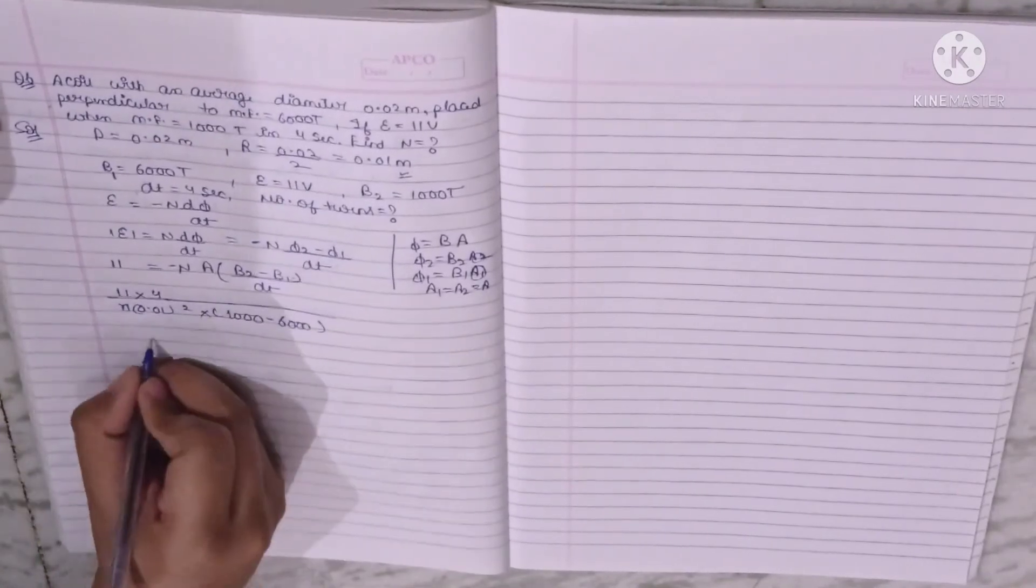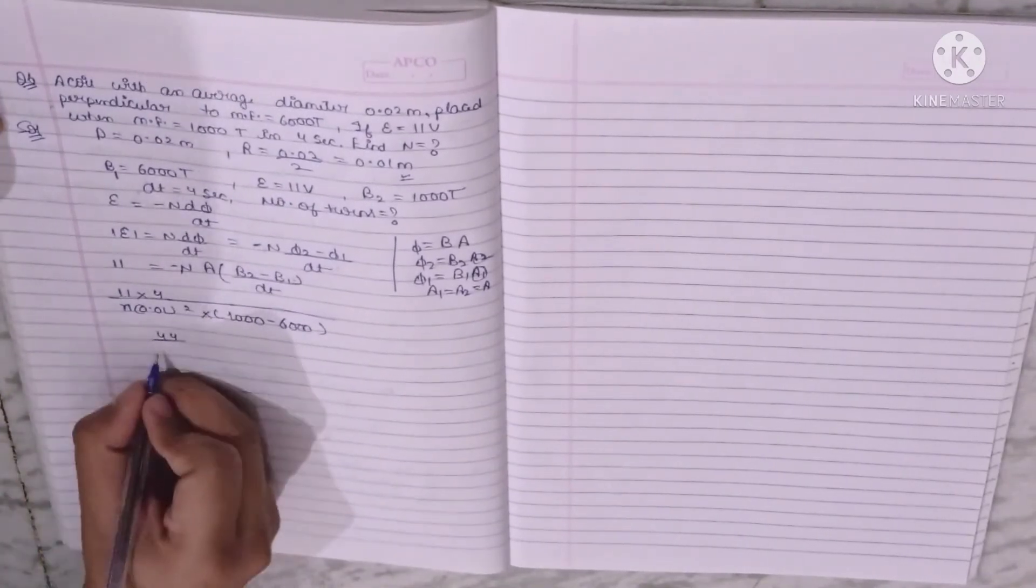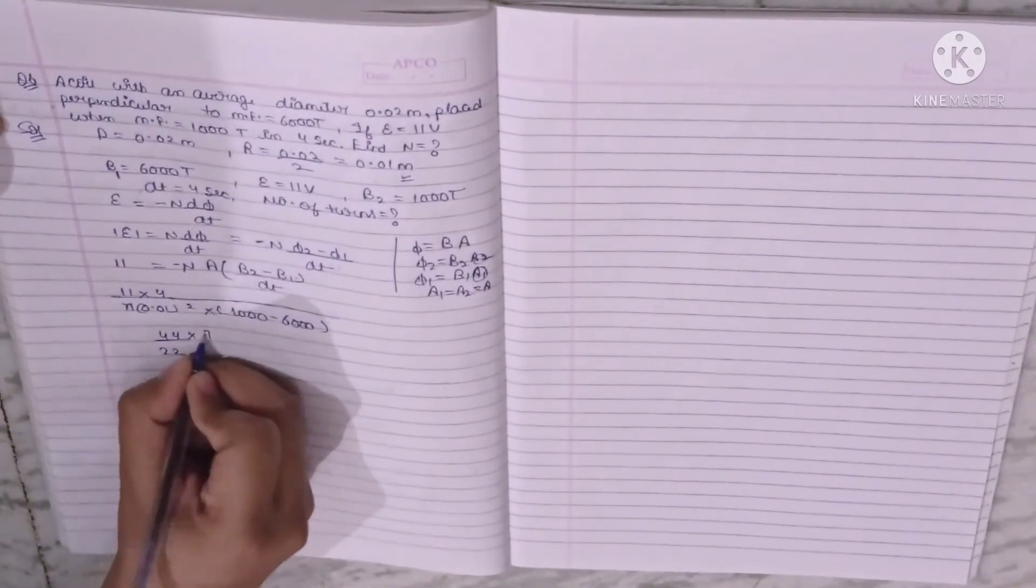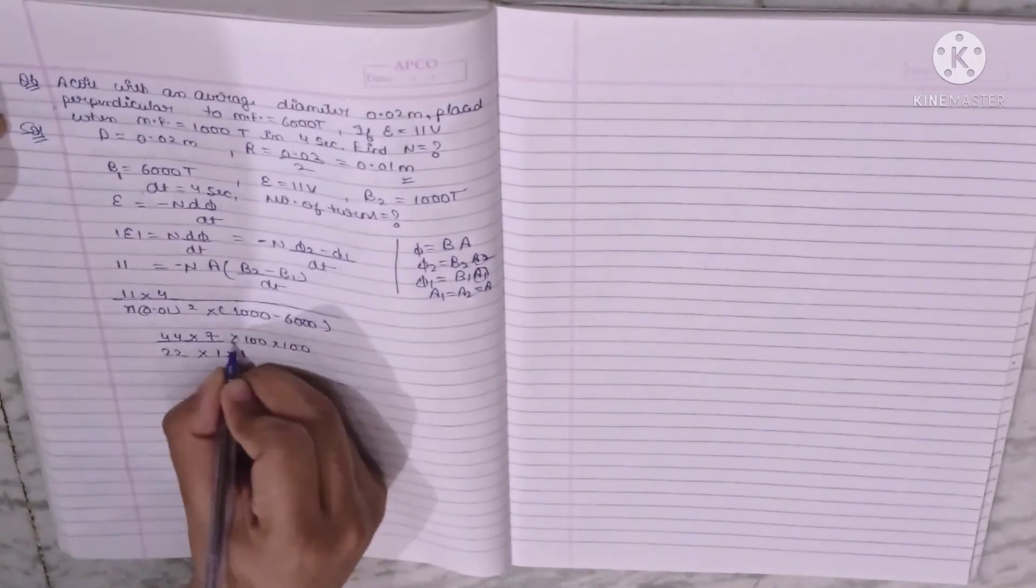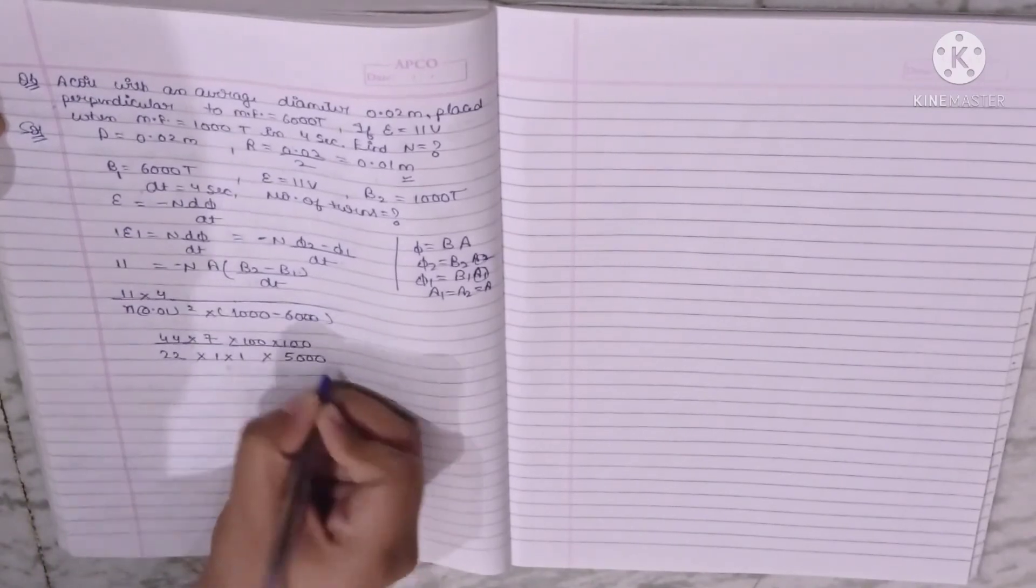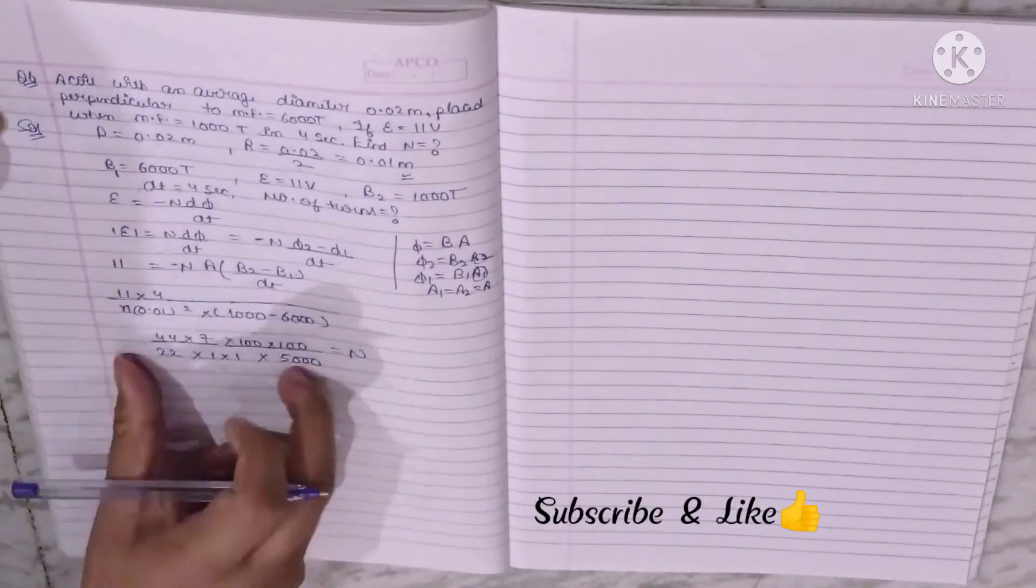When we solve this, 44 upon 22 into 7 into 1 into 100 into 100 upon 5000 equal to N. When we solve this value, then the number of turns is 28.